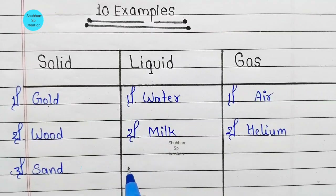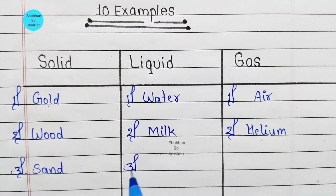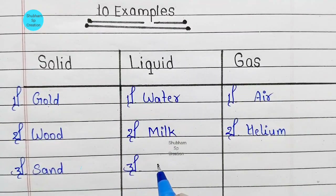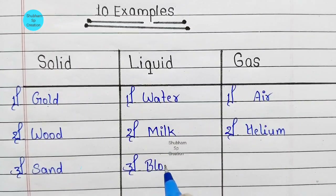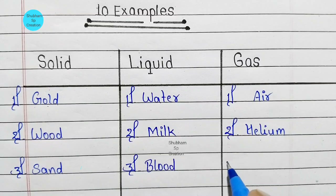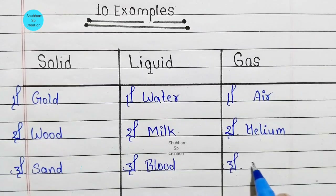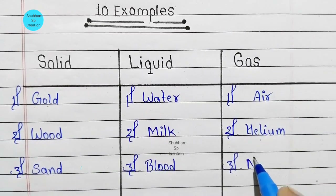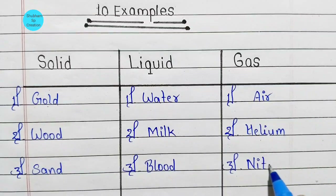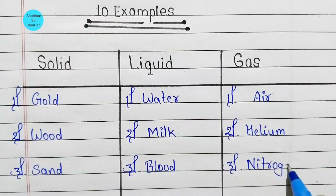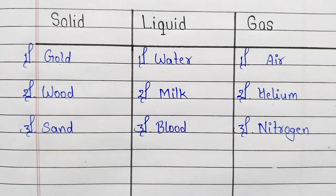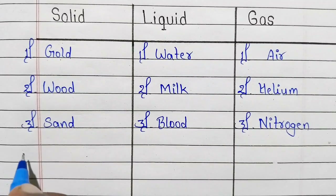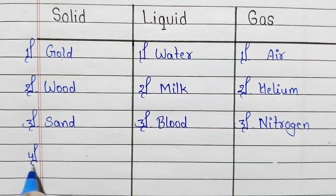Third number: solid — sand. Third number: liquid — blood. Third number: gas — nitrogen.